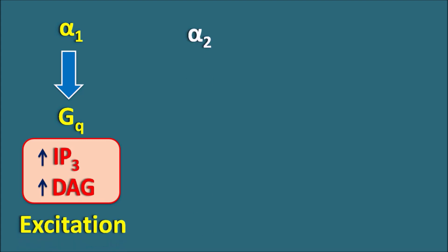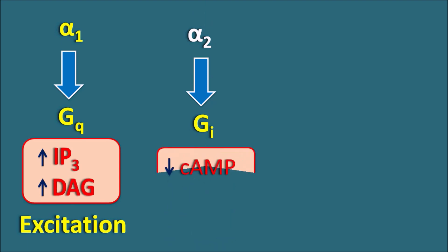Similarly, alpha-2 receptors are going to be coupled with G-alpha I, or simply Gi, where I indicates inhibitory nature. These are coupled with a decrease in cyclic AMP, and again it produces inhibition.